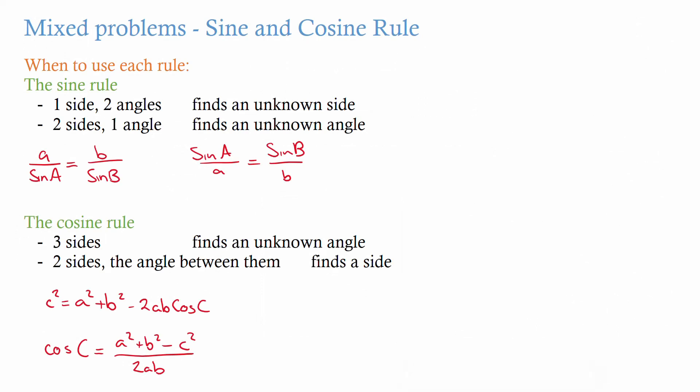In this video we're looking at mixed problems with sine and cosine rule and when to identify when to use which one. If you're given one side and two angles, use the sine rule to find an unknown side. If you're given two sides and one angle, use the sine rule to find an unknown angle. If you're given three sides, use the cosine rule to find the unknown angle. Or if you're given two sides and the angle between them, use the cosine rule. You need to look at what you're given and then identify which of the rules applies.